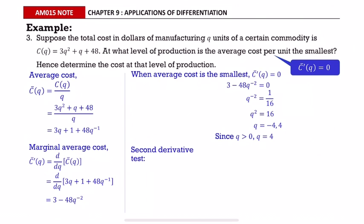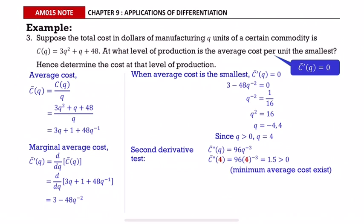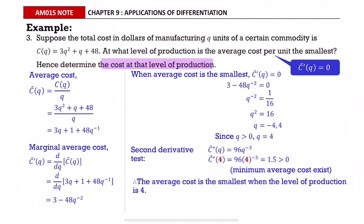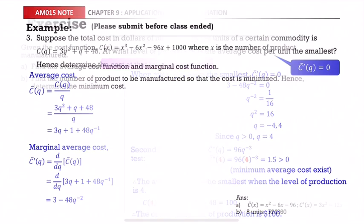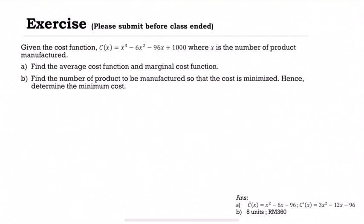Use the second derivative test to confirm: find the second derivative by differentiating the marginal average cost, then substitute q = 4. The result is positive (greater than zero), so a minimum average cost exists. Substituting q = 4 into the cost function gives the cost equal to $100.